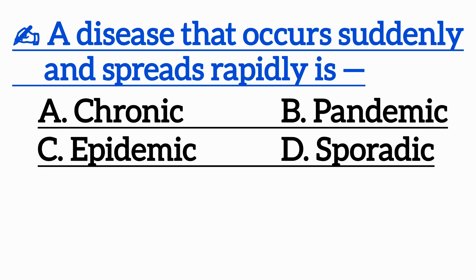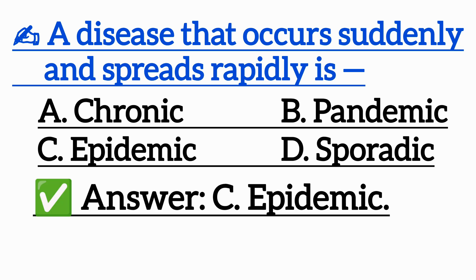Question 18: A disease that occurs suddenly and spreads rapidly is — Option A: Chronic, Option B: Pandemic, Option C: Epidemic, Option D: Sporadic. Correct answer is Option C: Epidemic.